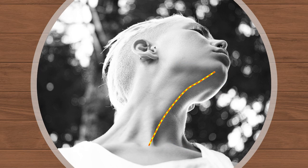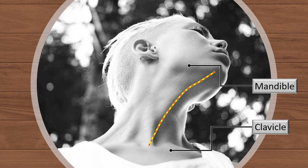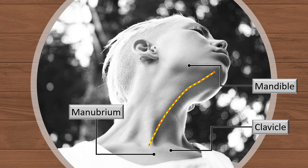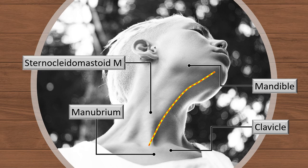Let's go through the details step by step, from above downwards. That is the lower border of the mandible, clavicle at the lower end, manubrium in between the two clavicles. The gap between the two clavicles where the manubrium does not fully jut out upwards is the sternal notch. The important muscular landmark is the sternocleidomastoid muscle.